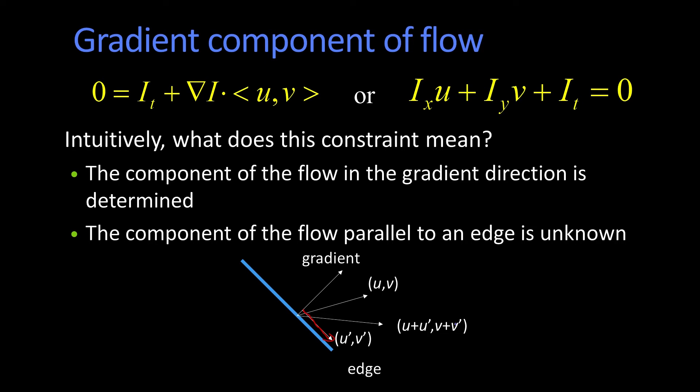All right? And this new vector here, which was the original u, v plus u prime v prime, it has the same amount perpendicular to the edge in the direction of the gradient, but a different amount along the edge.